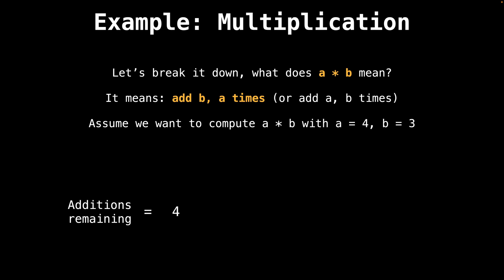Currently, we have four remaining additions to do since we haven't done any. So let's add one instance of b. Now we have three remaining additions to do. Let's add another instance of b. Now we have two remaining additions. Let's add another instance of b. Now we only have one more addition to do. And lastly, we add our final instance of b. And now you can see that we have zero remaining additions to do because we have added b exactly four times or exactly a times.